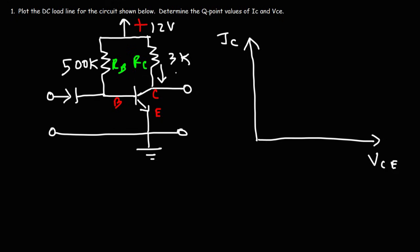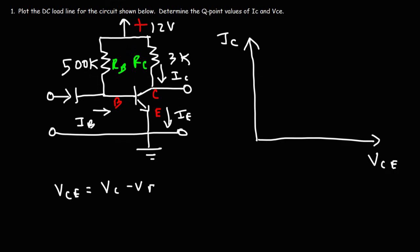IC is the current flowing to the collector of the transistor. IE is the current flowing from the emitter of the transistor. IB is the base current. VCE is the voltage across the collector and the emitter — it's VC minus VE.